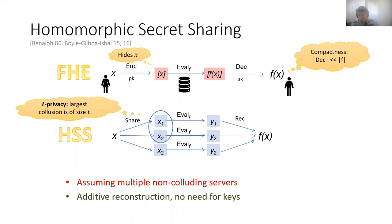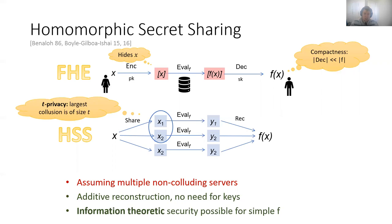As a plus, we get good efficiency features. HSS commonly has additive reconstruction, which implies the reconstruction algorithm is very simple — it just adds together all the output shares. Also, you don't need to worry about public and secret keys. In addition, HSS, unlike FHE, can exist with information-theoretic security for simple functions F.